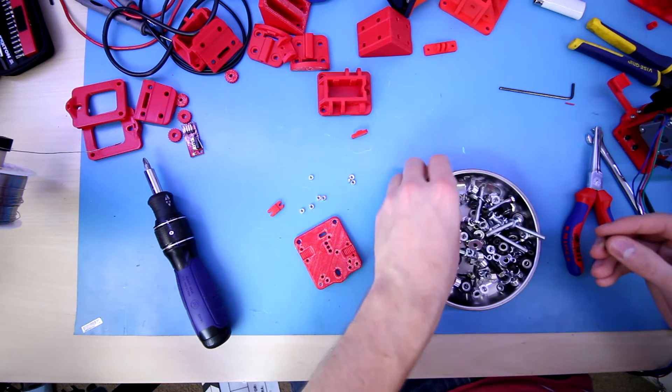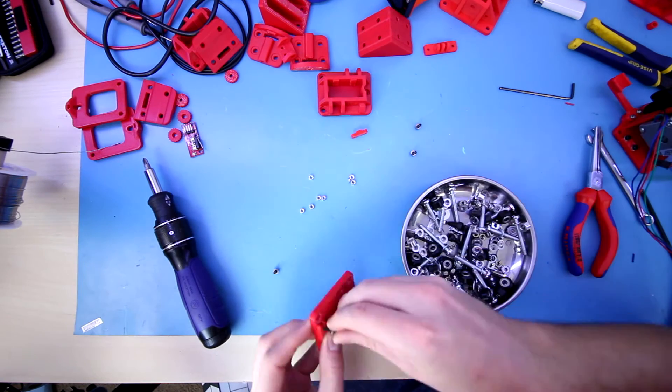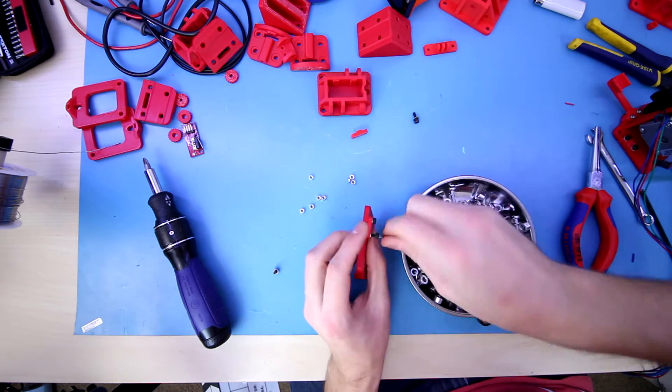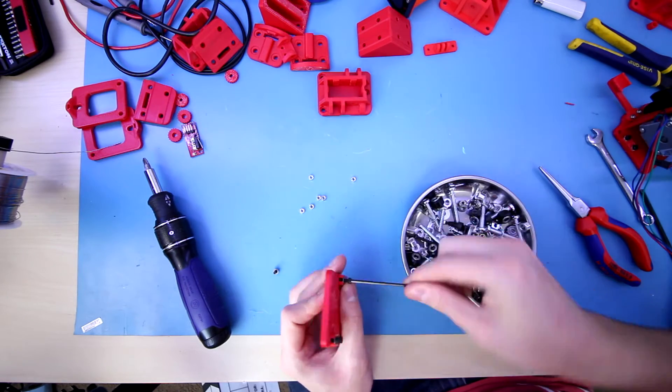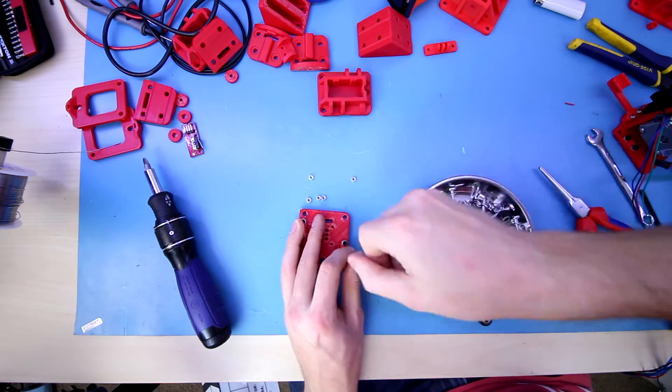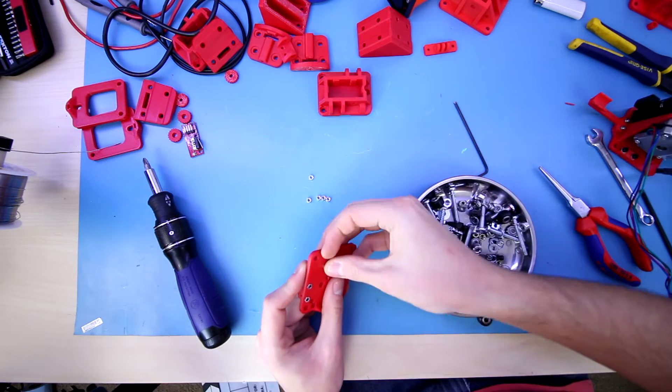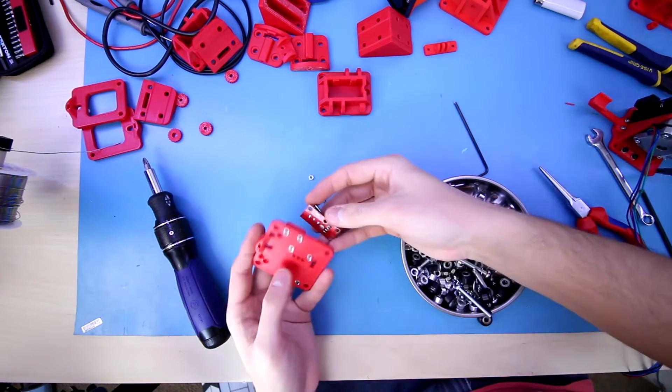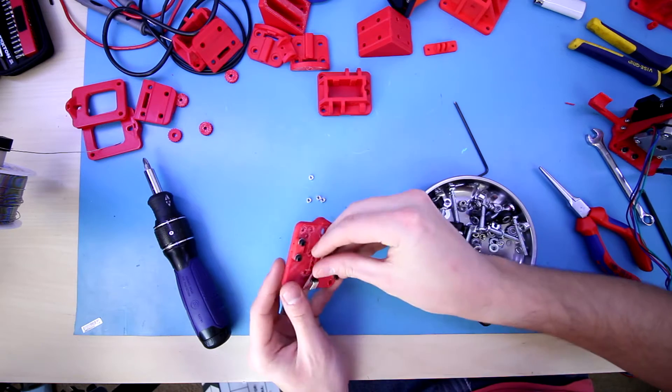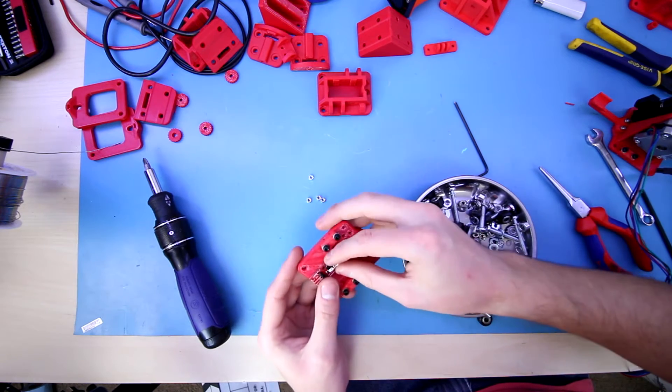We'll start off with the belt holders. Now it's time to go ahead and put the end stop in, and there's even little holes for the solder point contacts for the switch and the plate there.